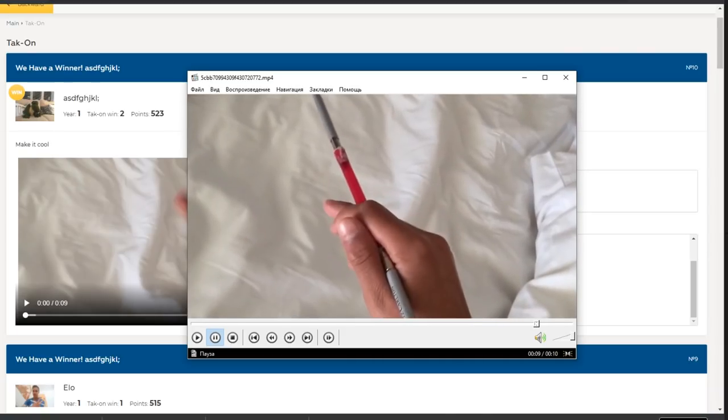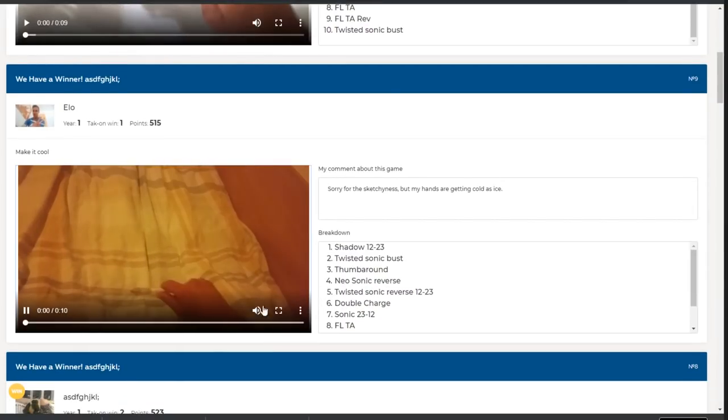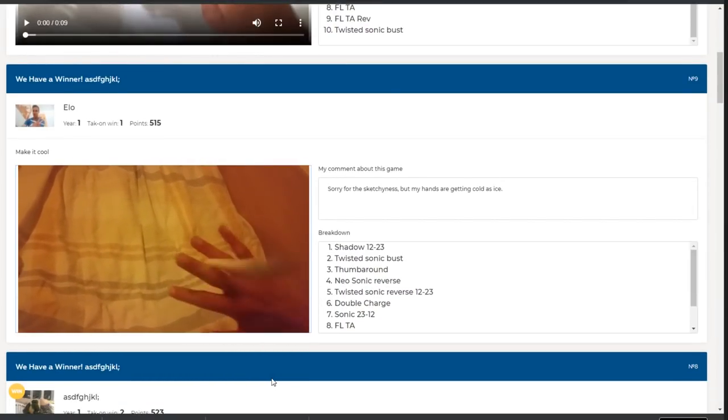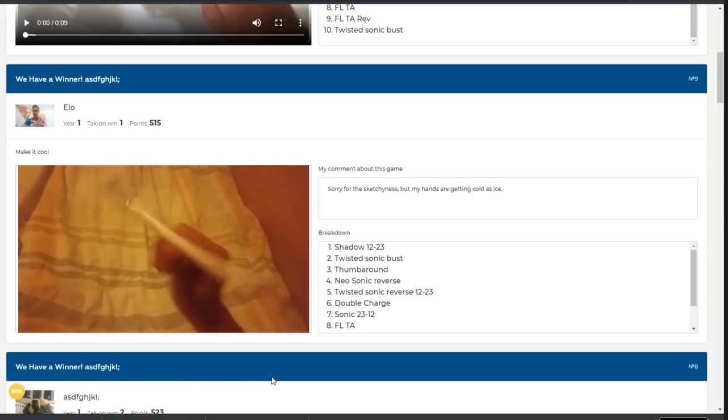Despite changing direction again, this time it is too much. When it was about previous mini combo FLTA, it made it look interesting, but the Twisted Sonic Bust, this time it just doesn't work in this combo. That's why this guy won the game, because it is not that easy to make it smooth.